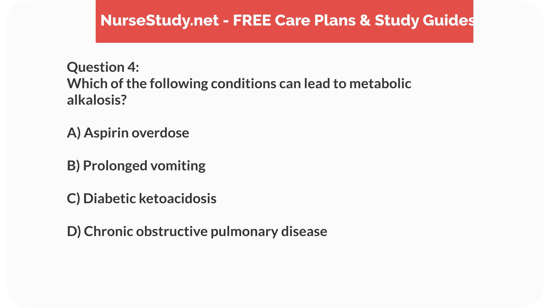Question 4. Which of the following conditions can lead to metabolic alkalosis? A. Aspirin overdose. B. Prolonged vomiting. C. Diabetic ketoacidosis. D. Chronic obstructive pulmonary disease.